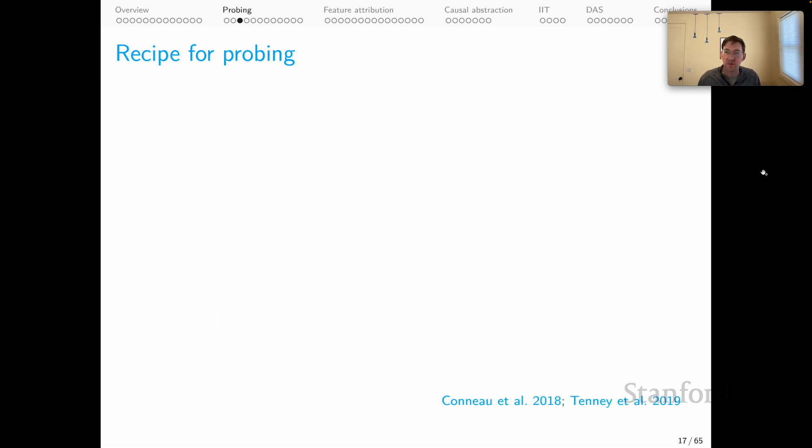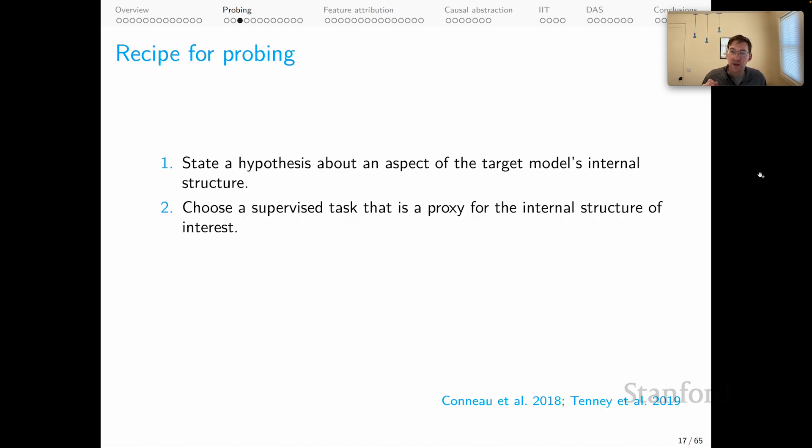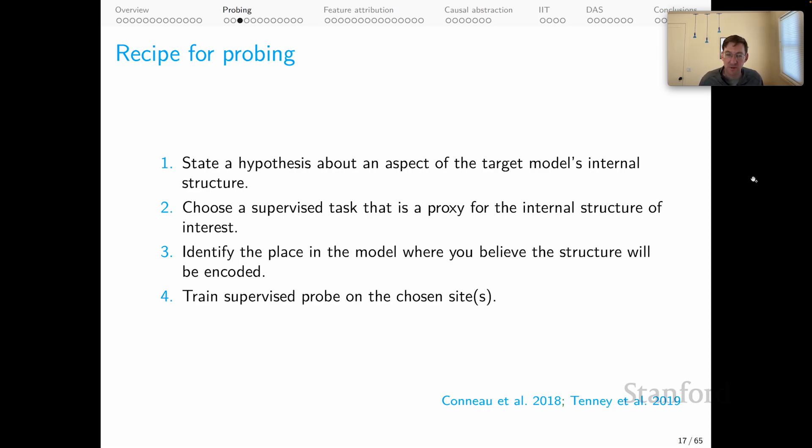Let's start with a kind of recipe for probing to be careful about this. The first step is that you state a hypothesis about an aspect of the target model's internal structure. You could hypothesize that it stores information about part of speech or named entities or dependency parses. You name it, the hypothesis space is open. You then need to choose a supervised task that is a proxy for the internal structure of interest. If you're going to look for part of speech, you need a part of speech data set and you're going to be dependent on that data set when it comes to actually defining the probe itself. Then you identify a place in the model, a set of hidden representations where you believe the structure will be encoded. And you train a supervised probe on the chosen site. And then the extent to which your probe is successful is your estimate of the degree to which you were right about the underlying hypothesis. But there are some caveats there.